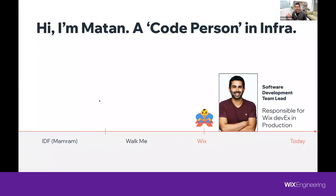Let me introduce myself. My name is Matan Cohen, and I'm a software development team lead at the production platform at Wix. My team is a very unique one — we are a software development team inside a production group. Our production group is responsible for most of the Wix infrastructure, and my team's responsibility is bringing software development practices and assimilating them in the production group.